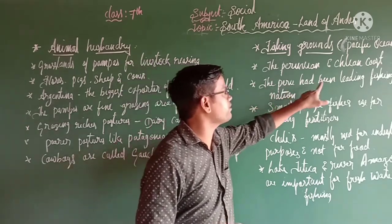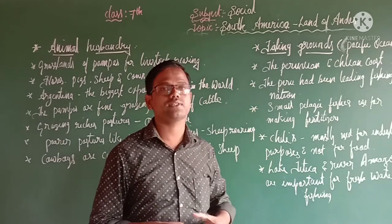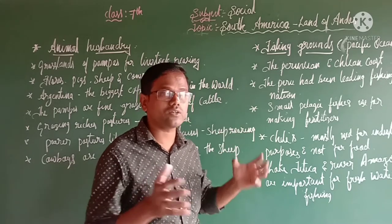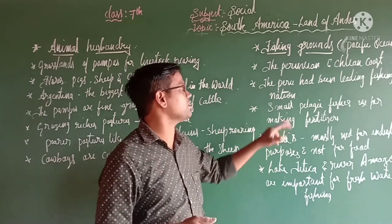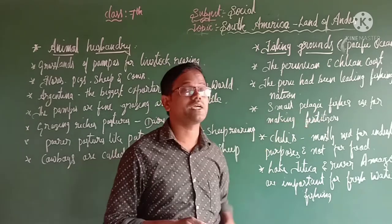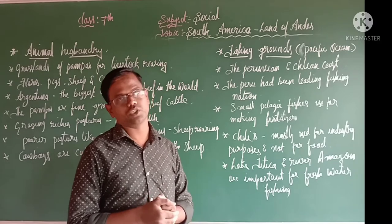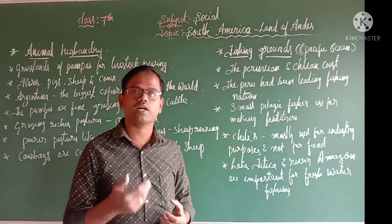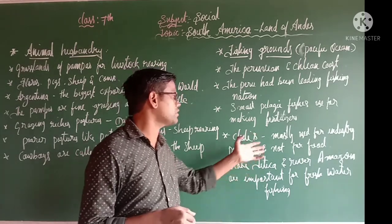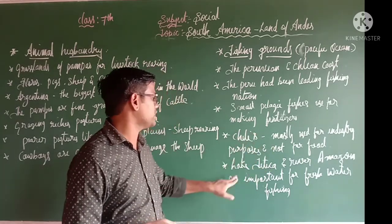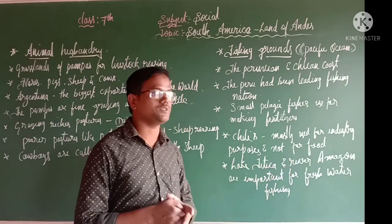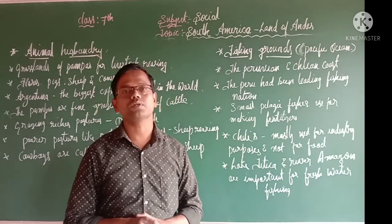Peru has been a leading fishing nation, but is losing its importance because it mainly collects small pelagic fishes used only for making fertilizers. Chile collects fish used for industrial purposes, not food. Lake Titicaca and the Amazon River are important for freshwater fishing. Cowboys called gauchos manage the sheep in the grasslands.